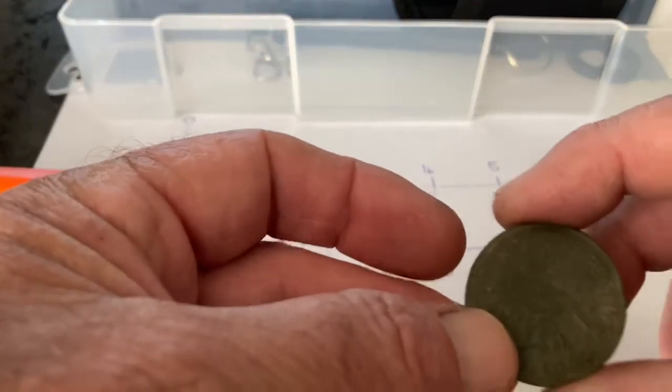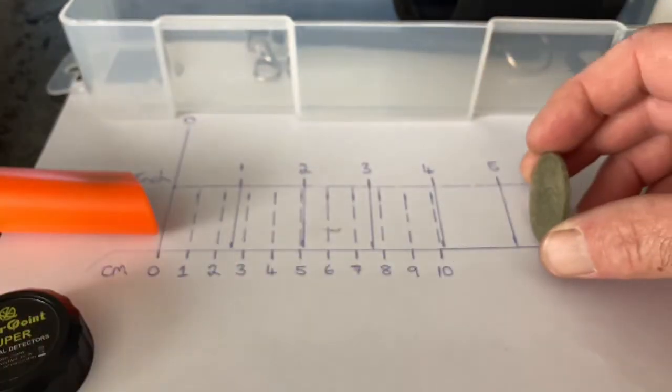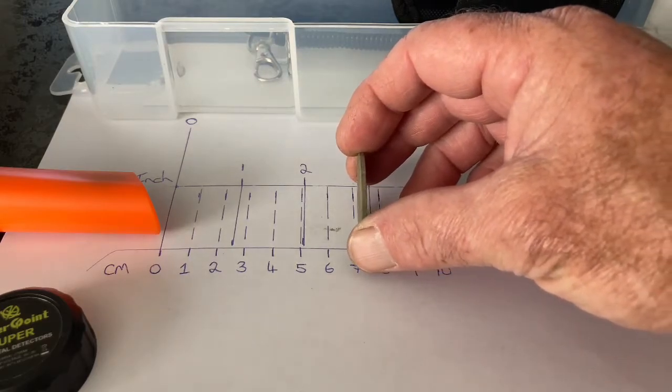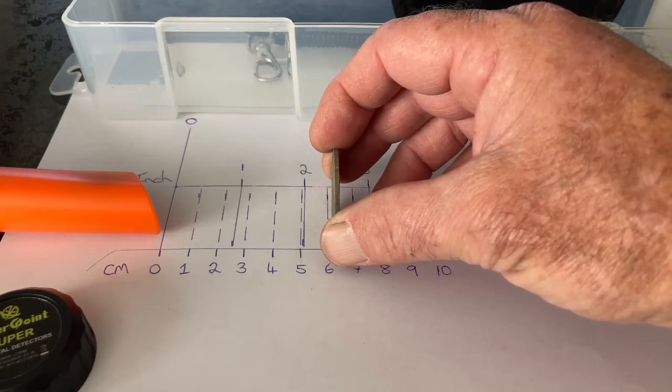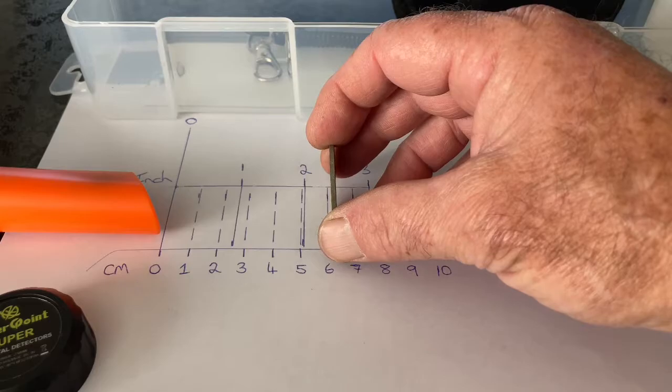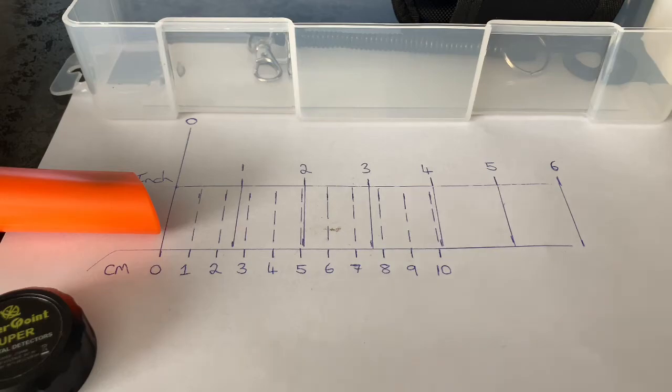We have a New Zealand one penny. That's around about the same, that's a little over six centimeters.